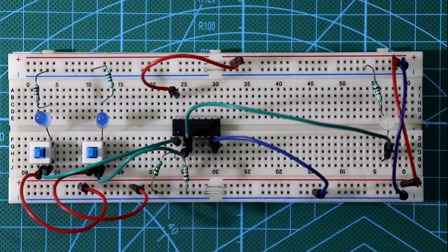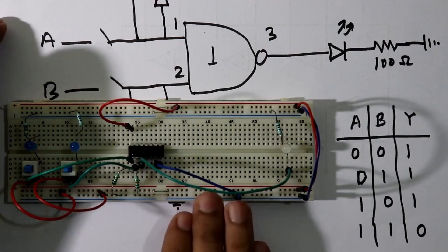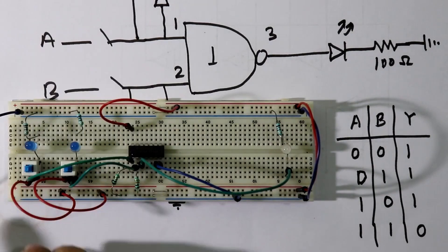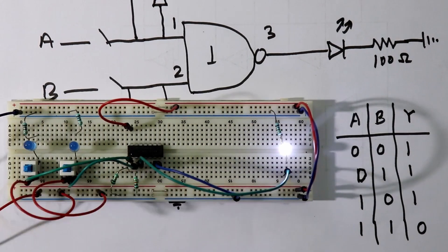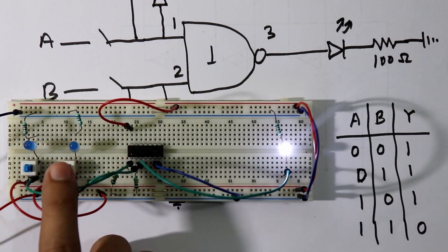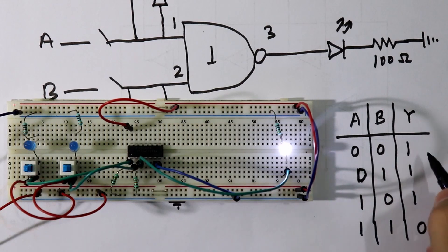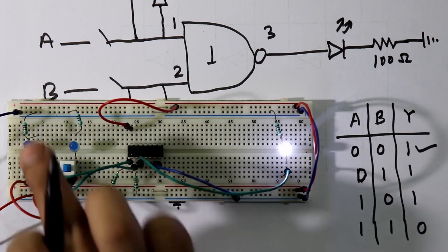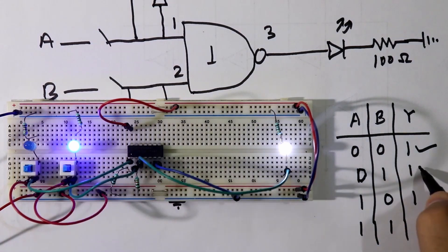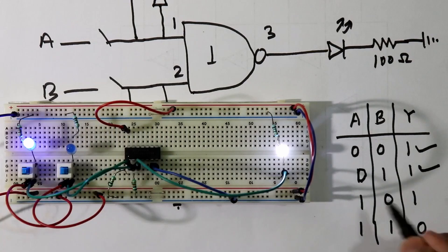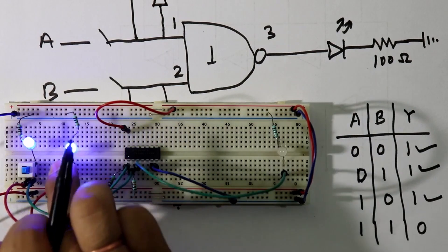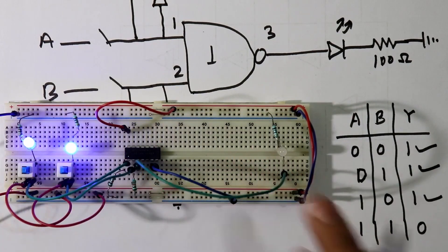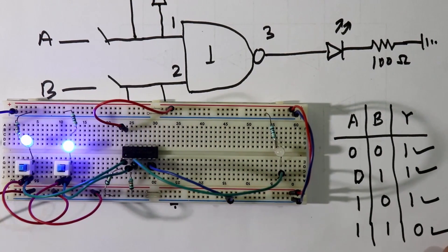Now the circuit connection is complete. Let's verify the truth table by connecting the power supply. With no input (0,0) the output is 1 — correct. For input (0,1) the output is 1 — correct. For input (1,0) the output is 1 — correct. For input (1,1) the output is 0 — correct.